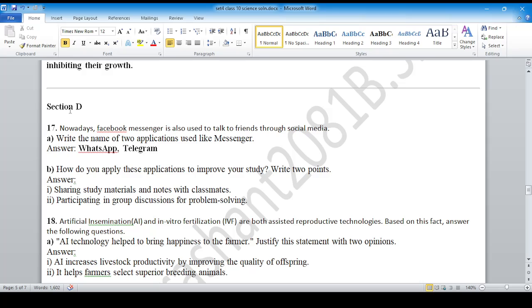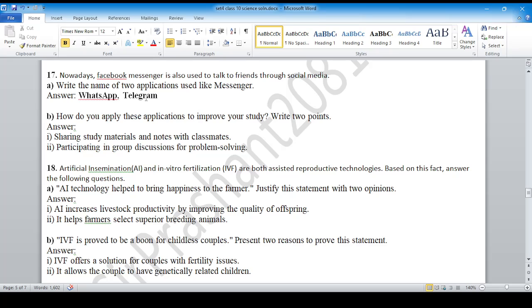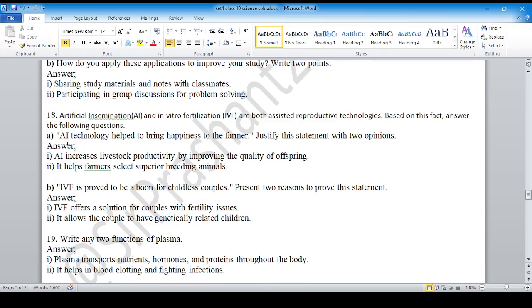Section D, the long questions. Question 17: WhatsApp and Telegram are two applications used like messenger. You can add Viber and IMO as well. Question B: Sharing study materials, participating in group discussion. Question: AI, artificial insemination. How do you think in vitro fertilization?